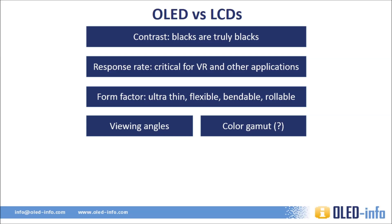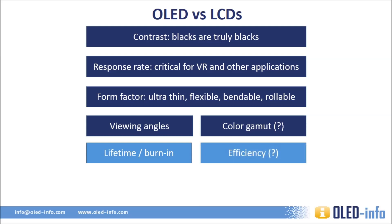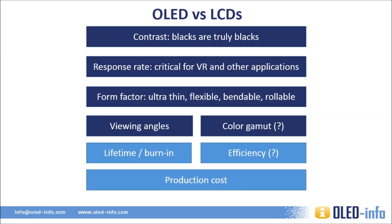OLEDs aren't perfect though, and LCDs have some advantages over the new technology. First of all, LCDs last longer. Most LED backlit LCDs have a lifetime rating of about 100,000 hours, while OLEDs are currently rated at about 30,000 hours, which is still enough for over 13 years of watching TV six hours a day. But OLEDs have a bigger problem — because each color degrades differently, there may be burning issues even after a short while, and this depends on the image on display. With an OLED TV, the power consumption depends on the image shown. For a totally white image, an LCD is more efficient than an OLED, whereas for a mostly black image, an OLED will be much more efficient.